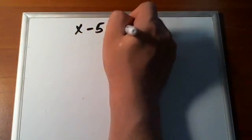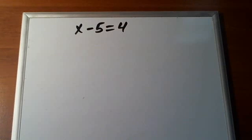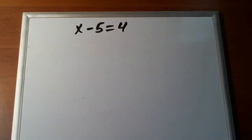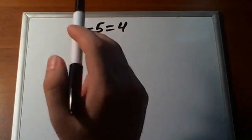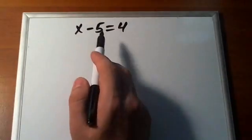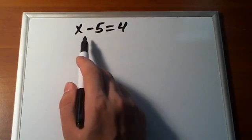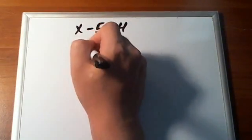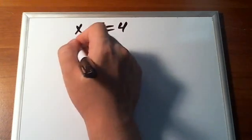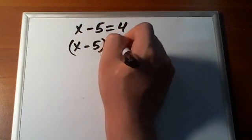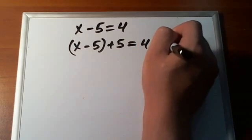Another example: x minus 5 is equal to 4. Pause the video and try to solve it. In order to solve this linear equation, we need to add 5 to both sides. So, x minus 5 plus 5 is equal to 4 plus 5. We added 5 to the left side, therefore we had to add 5 to the right side as well.